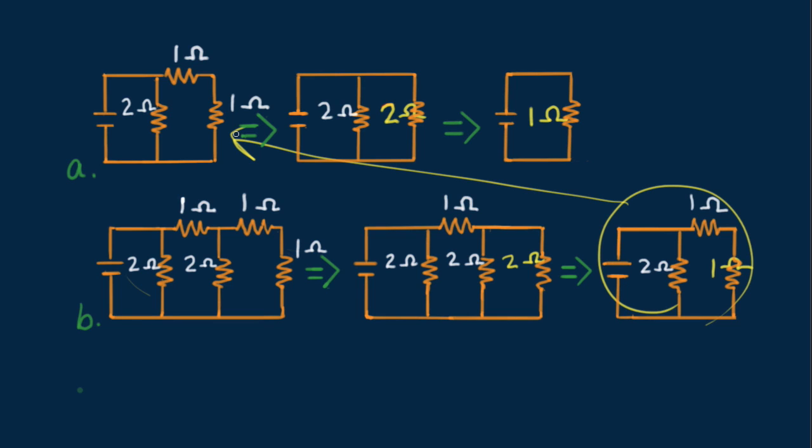That means a battery wouldn't know the difference if it were connected to circuit A or circuit B. They're both equivalent.